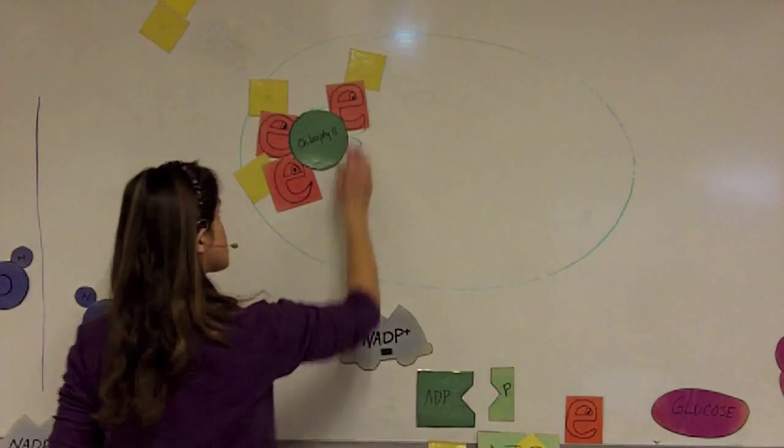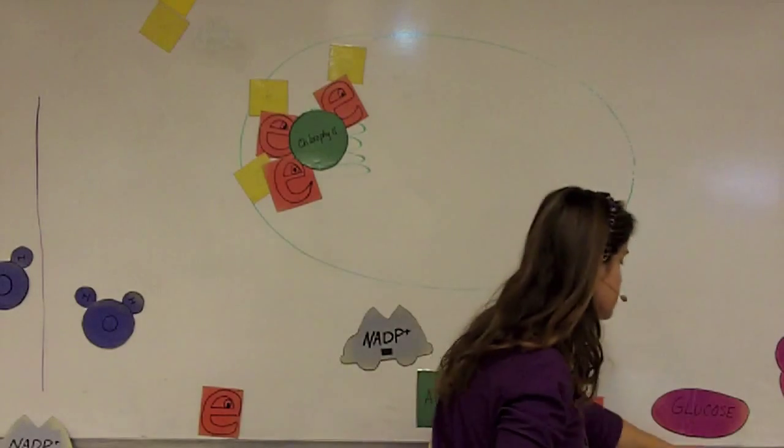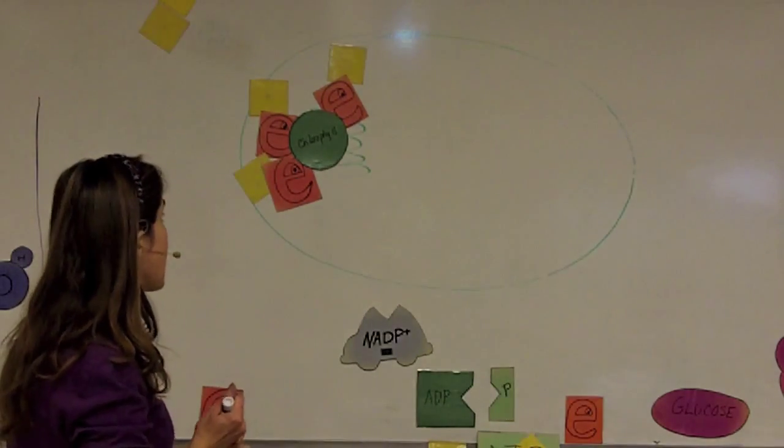Now the cell needs to capture that energy as best it can, and it does it in two different ways. And they go by technical names like photosystem 1 and photosystem 2. We're just going to focus on what happens.